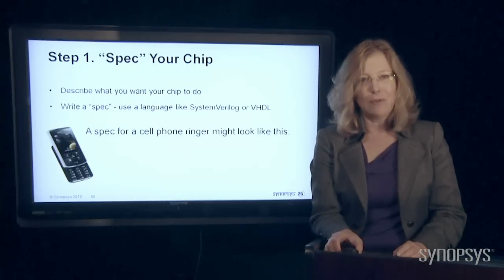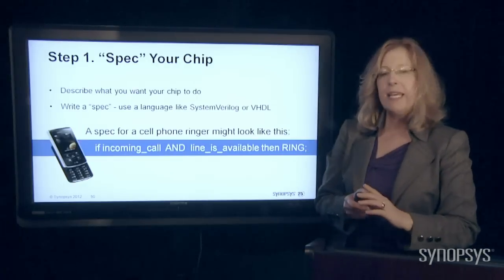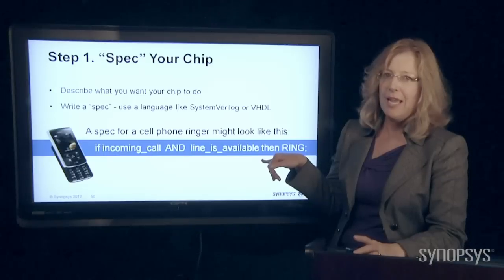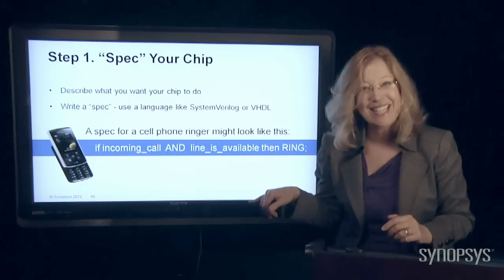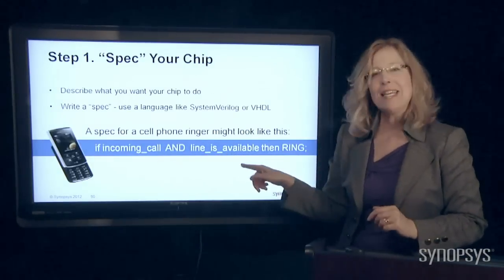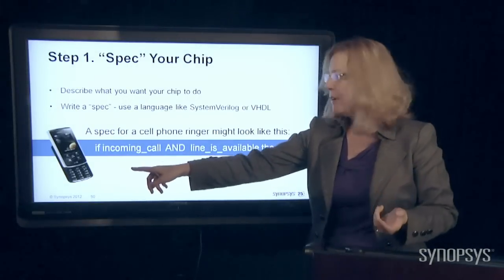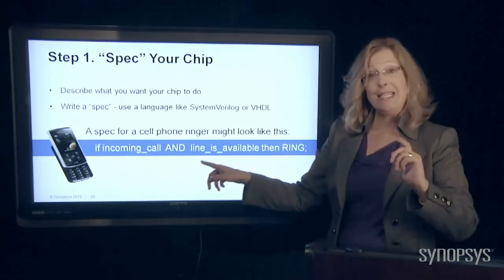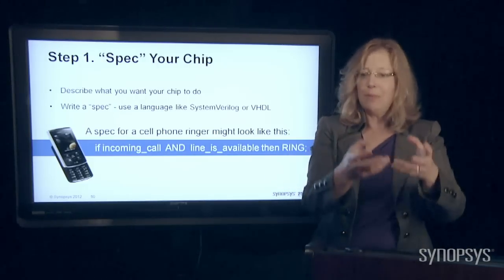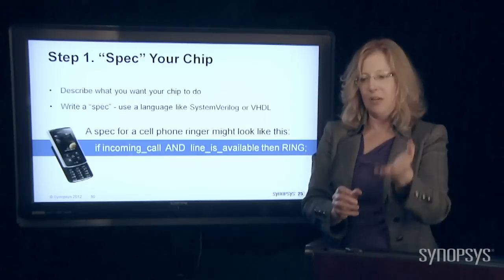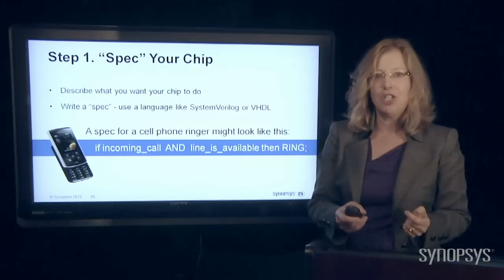Let's go back to our cell phone ringer for a good example. If I'm going to write this spec for a cell phone ringer, it might look like this. Keep in mind this is not official SystemVerilog or VHDL — it's simplified and human readable. So you, the layperson, can actually read this and say: my cell phone ringer says if there's an incoming call and my line is available, then ring. You can write to the computer: design me a chip that if there's a call coming in and my line is available, then make it ring.